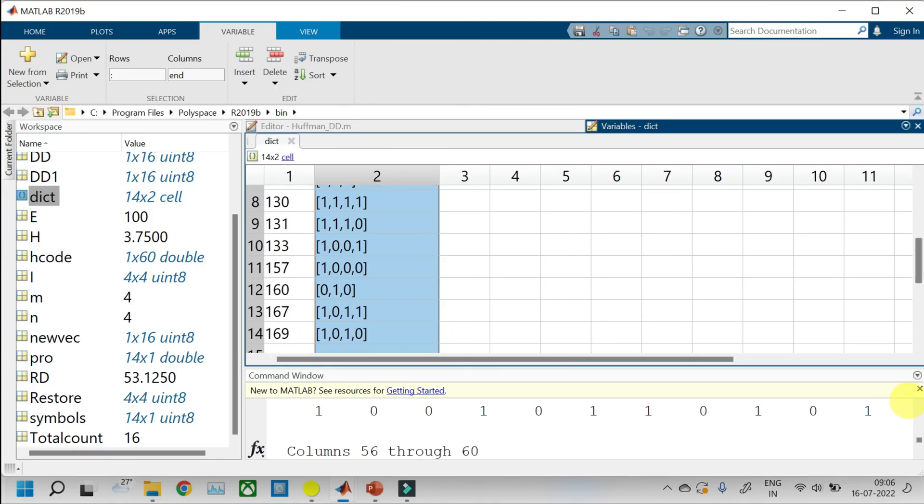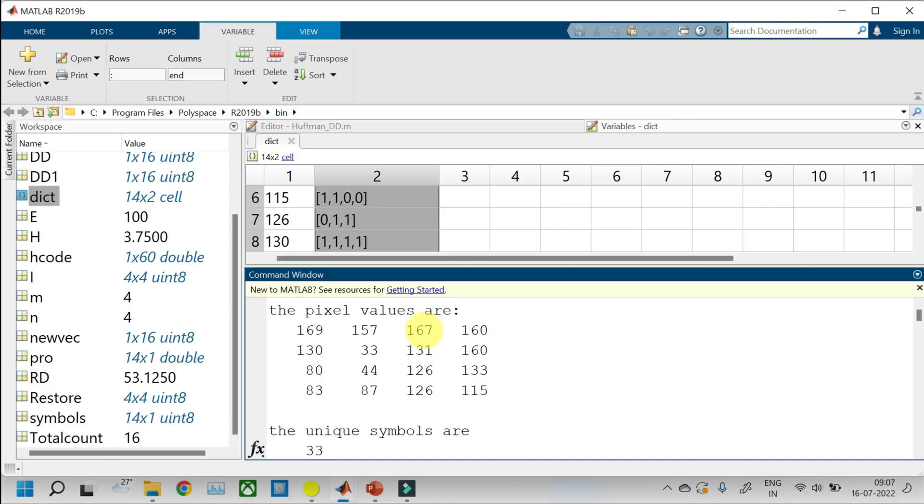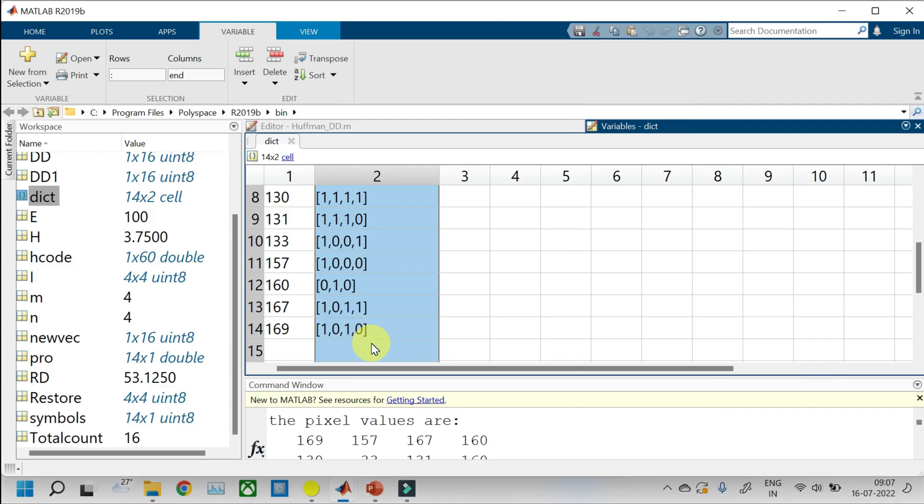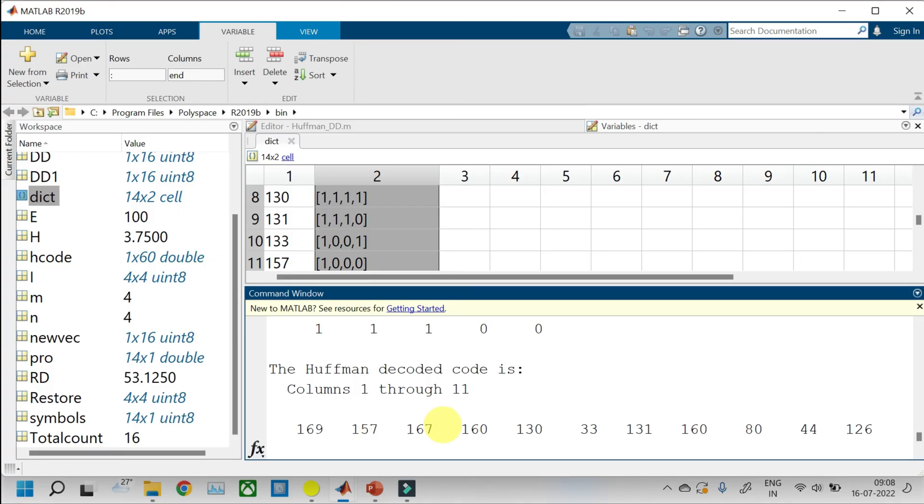So, 126 and 160 are occurring more number of times. And therefore, the code is short. And in the encoded code, you can see that the values are 169, 157, 167. So, 169 is having code 1010, 157 is 100 and 167 is 1011. So, in the encoded message, we will see 1010, 100 and 1011. You can see here 1010, 100 and 1011. Similarly, other codes are also assigned. And the Huffman decoding will be recovering the original pixels. 169, 157 and 167 are the first three symbols.